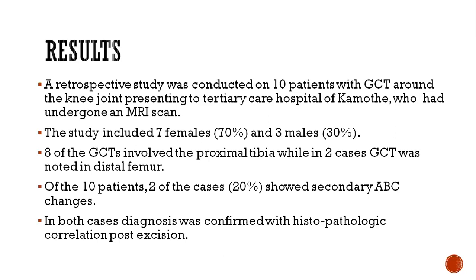After the retrospective study was done on 10 patients, it was found that out of the 10 patients, only two cases showed secondary changes of aneurysmal bone cyst formation within the GCT. Of the 10 cases included, seven were females and three were males. Eight cases of GCT were in the proximal tibia while just two cases were in the distal femur. Both positive cases with secondary ABC changes had their diagnosis confirmed on histopathological correlation post surgical excision.